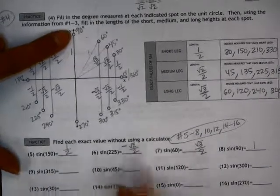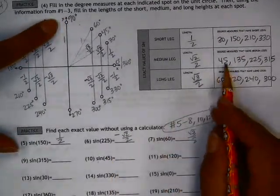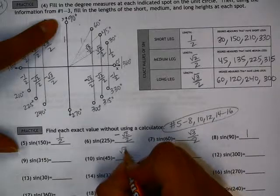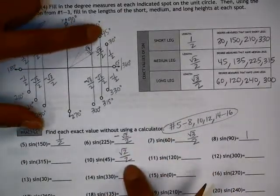Let's skip to number 10, sine of 45 degrees. Here, we have the medium leg of root 2 over 2. We're going to keep that positive since we're above the x-axis.